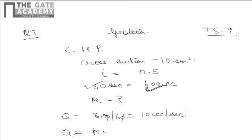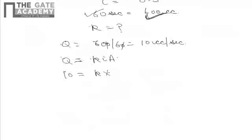know that Q equals k times i times A. Q is known as 10, k has to be calculated, i is known as 0.5, and the cross-sectional area is known as 10 centimeter square. So upon simplification, k comes out as 2 centimeters per second. Therefore, the correct answer for question number 7 is option D.